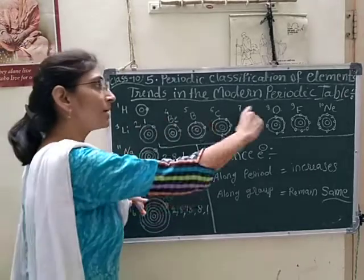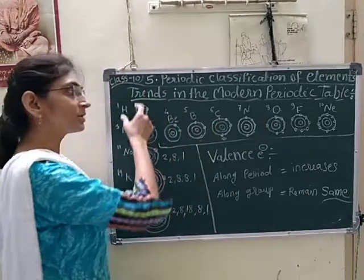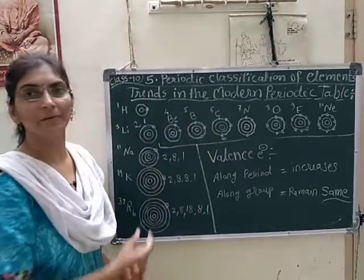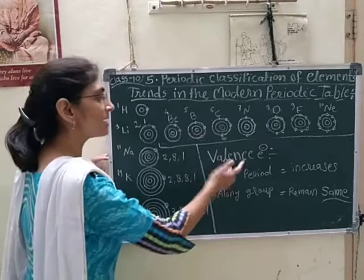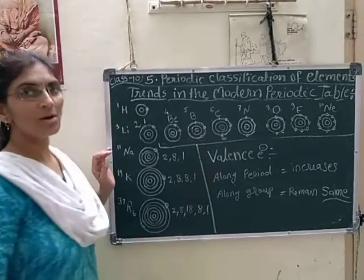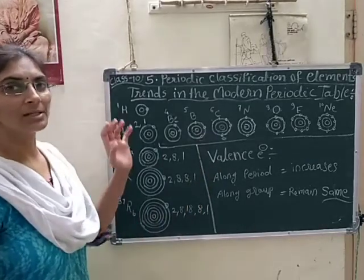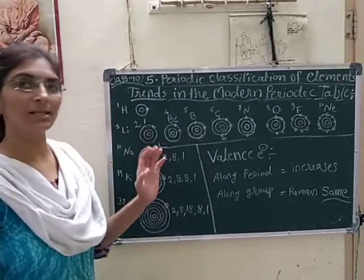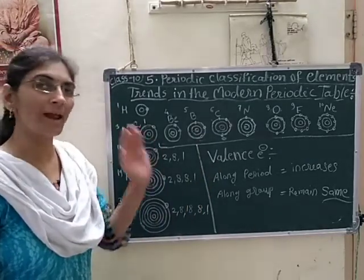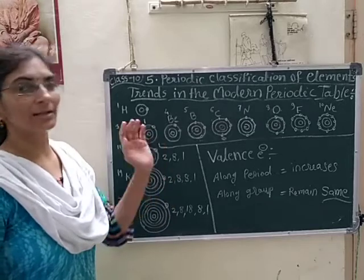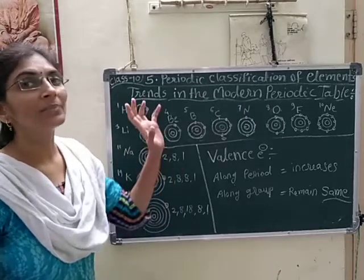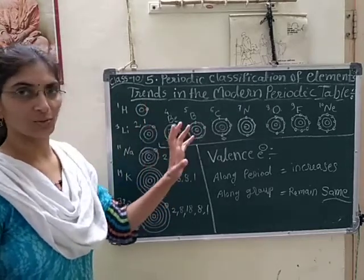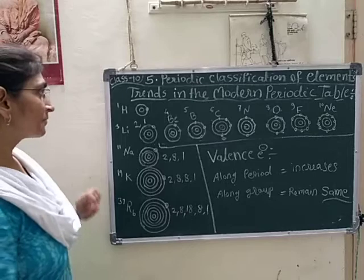Comparatively, both trends we will see here for the valence electron at first. Then we will see the trend of valency, then we will see the trend of atomic radius also.